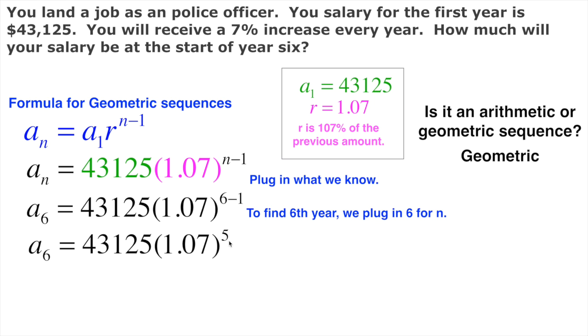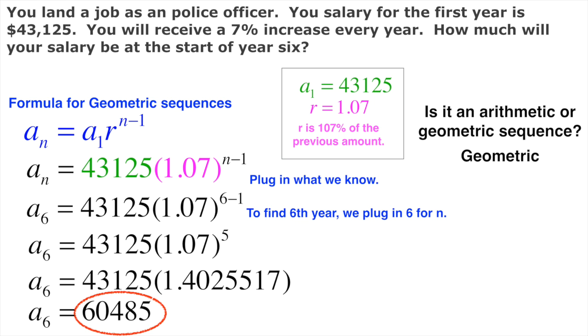Six minus one gives me five. Using order of operations, I have to take care of this exponent first. 1.07 to the fifth power I have to do first. Notice how I don't round this—I let it go as far as I possibly can. That helps me in the end. This one we're going to round to the nearest whole number. I multiply these two together and that gives me 60,485.